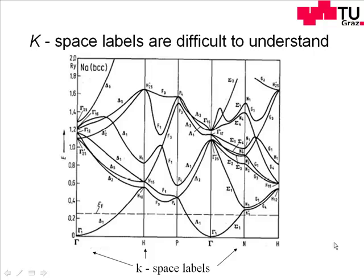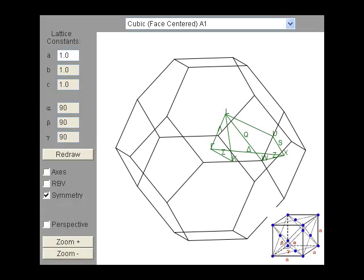One of the concepts that students find difficult to understand are the k-space labels used to indicate the points of high symmetry in k-space. These are often used to label the horizontal axis of a band structure diagram. One of the students wrote an applet that plots the symmetry points and symmetry lines of the Brillouin zones.